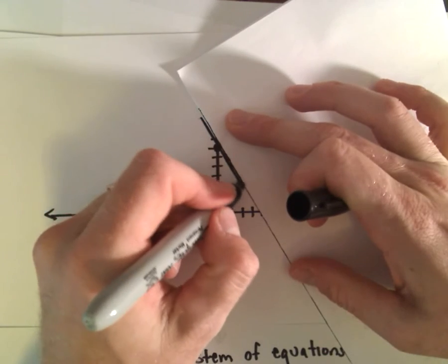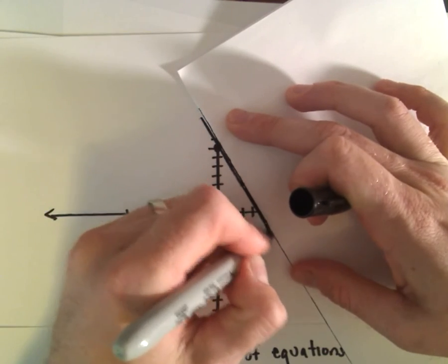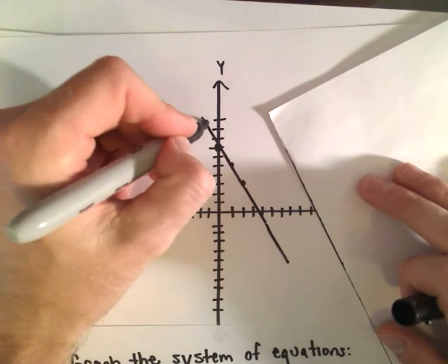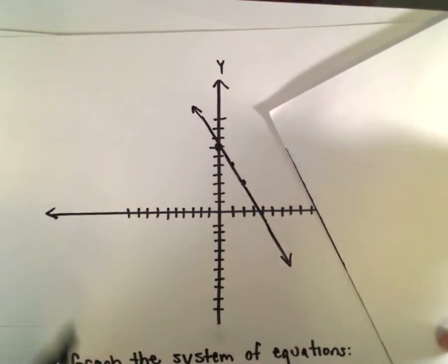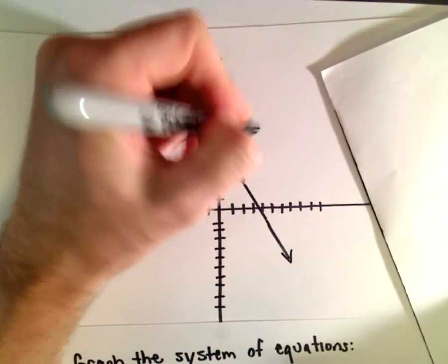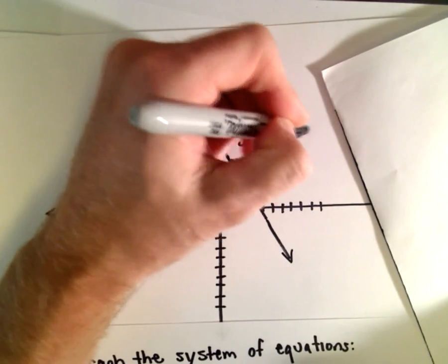You could even find the x-intercept if you wanted to make a better graph. There's y equals negative 2x plus 7.